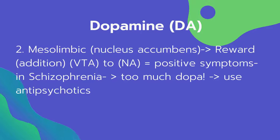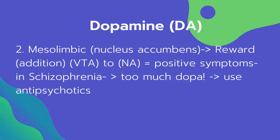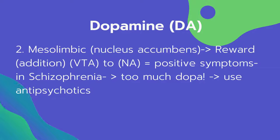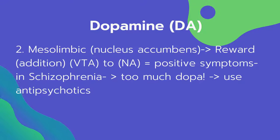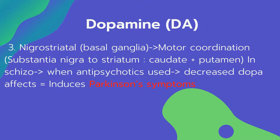The second dopamine pathway is the mesolimbic pathway, known for reward. It travels from the VTA to the nucleus accumbens. In schizophrenia, excess dopamine in this pathway causes positive symptoms. Antipsychotics are used to decrease dopamine here, which reduces those positive symptoms.